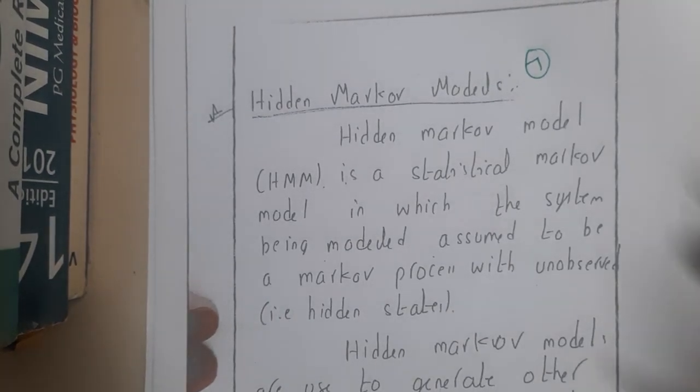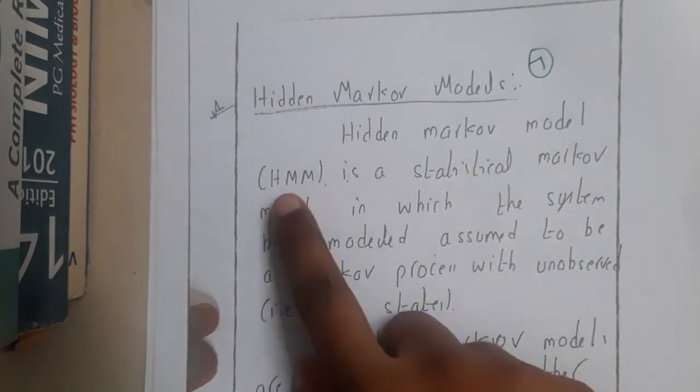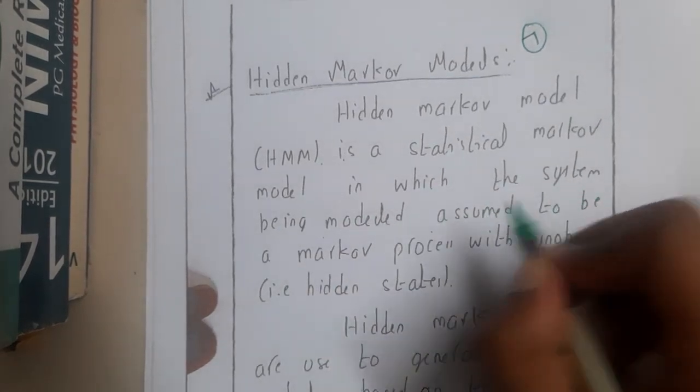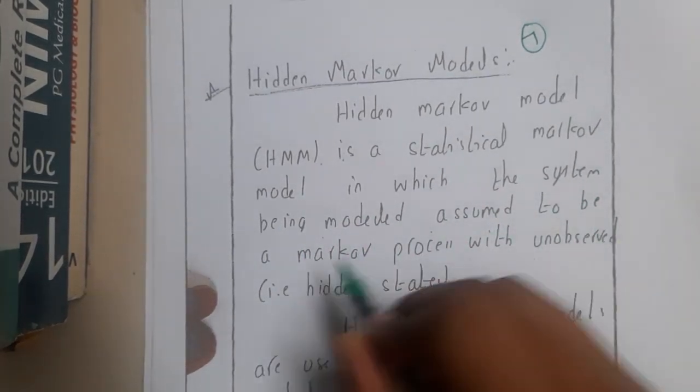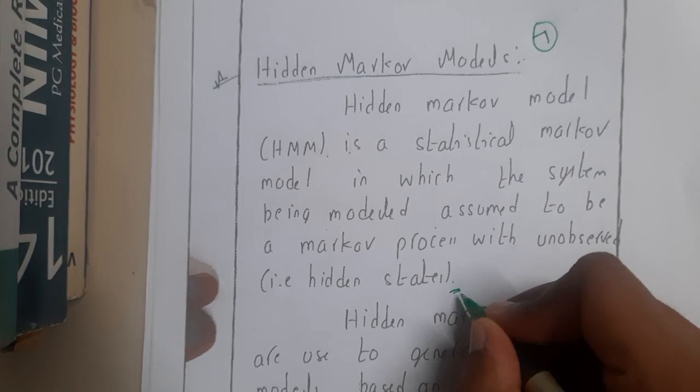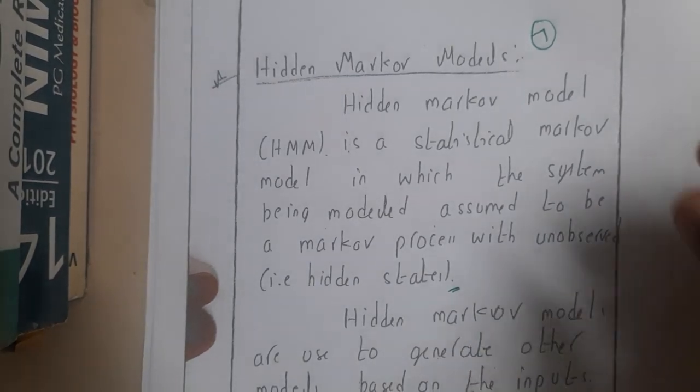Hidden Markov Model (HMM) is a statistical Markov model in which the system being modeled is assumed to be a Markov process with unobserved states, that is nothing but hidden states. Basically you will be having a start state, some hidden states, and after that the output states.